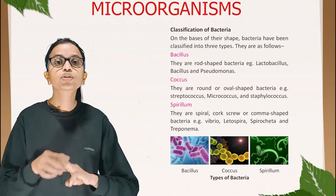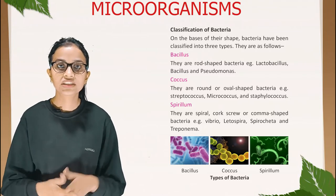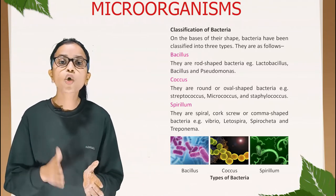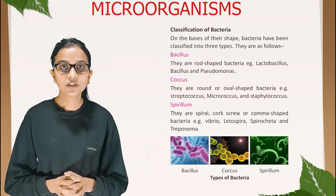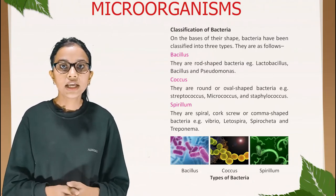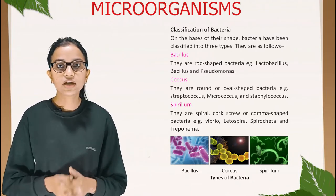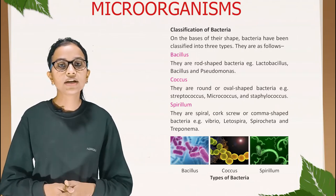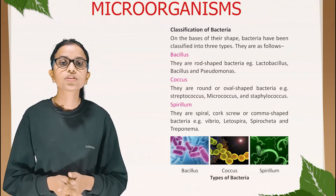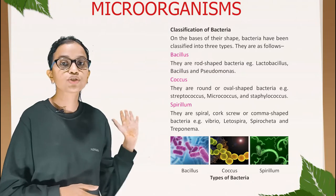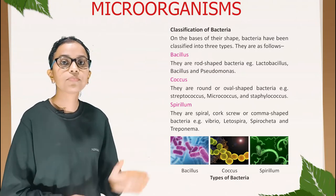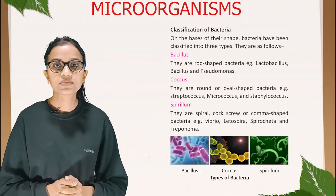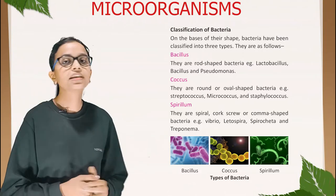Third, Spirillum — spiral, cork-screw or comma-shaped bacteria. Examples: Vibrio, Leptospira, Spirocheta, and Treponema. These are the pictures of three types of bacteria: Bacillus, Coccus, and Spirillum.